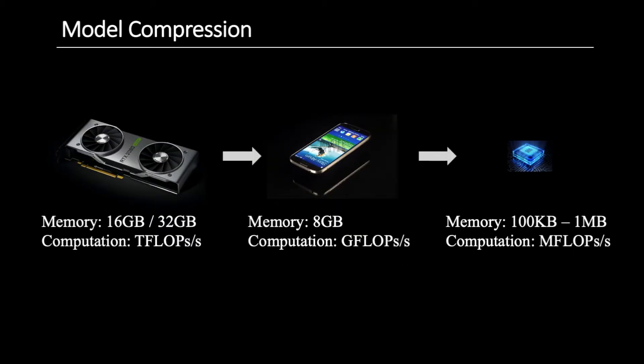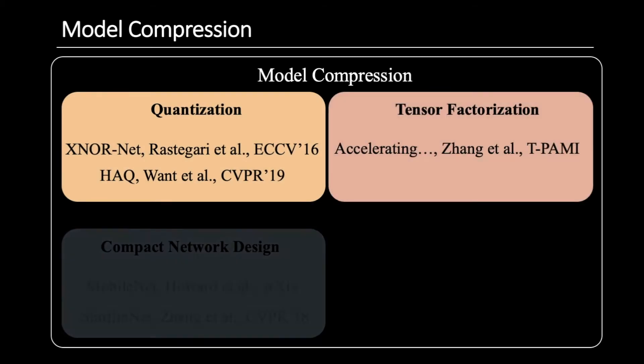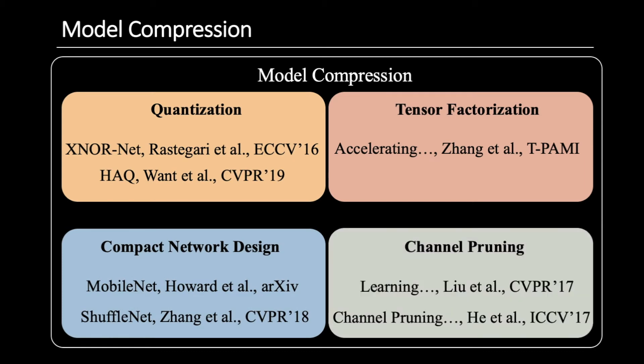Although deep neural networks have achieved many successes in computer vision, it is still a challenging task to deploy these networks on mobile devices. Model compression techniques aim to compress the deep model and deploy them on these devices. It can be roughly categorized as quantization, tensor factorization, compact network design, and channel pruning.